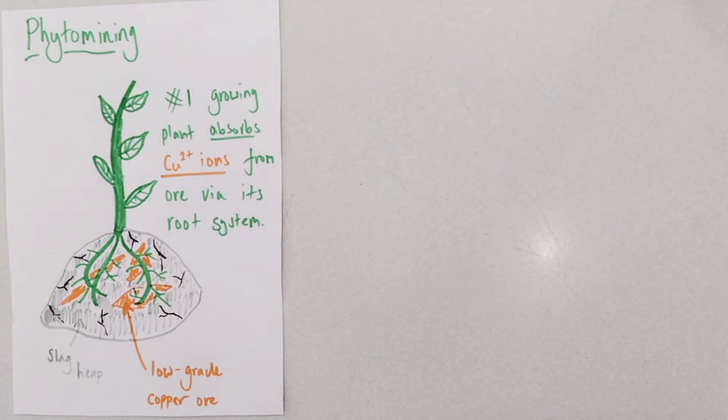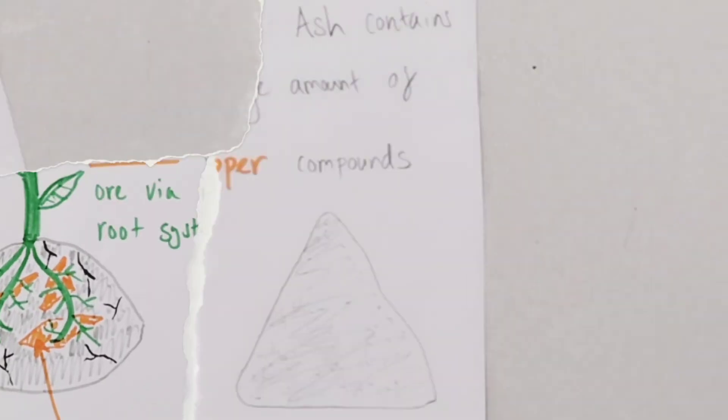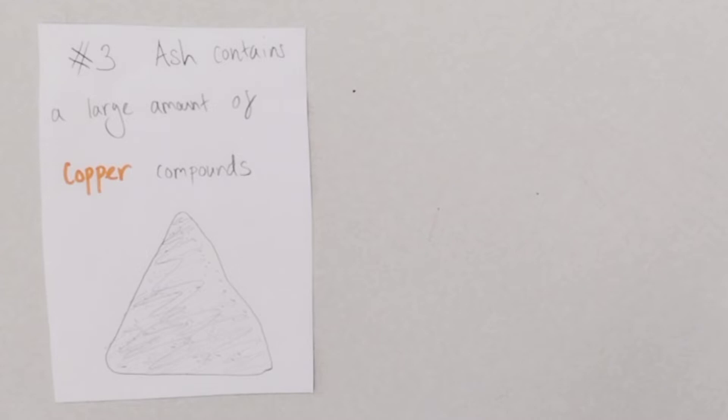The plants are hyperaccumulators. They're really good at absorbing a large number of ions from that soil or ore. Next we would harvest the plants, dry them out and then burn them to produce ash. That ash would contain large amounts of accumulated copper compounds which is what we want.